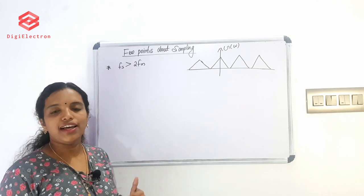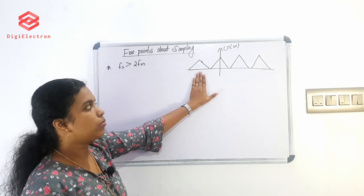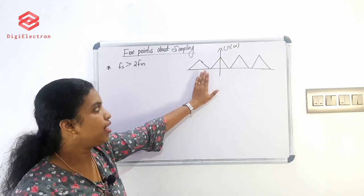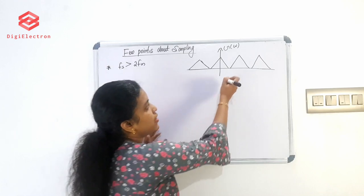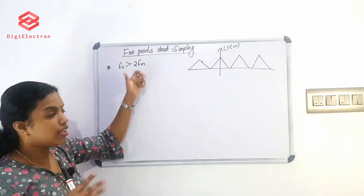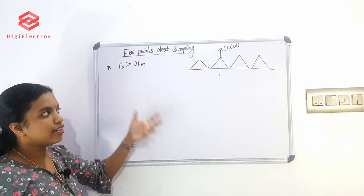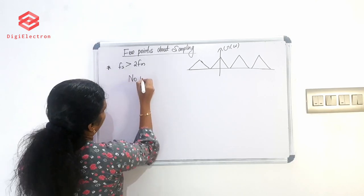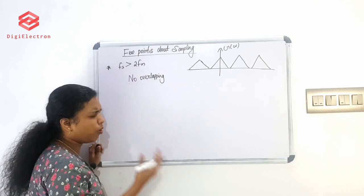We have the continuous time signal x(t) and we have recovery. However, if the sampling conditions are not met, the samples are overlapping — they repeat but with overlap. No overlapping is required for proper recovery.